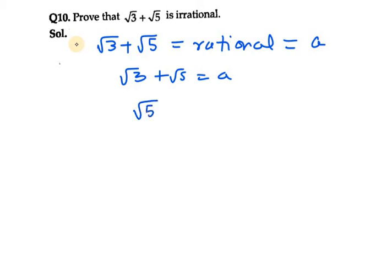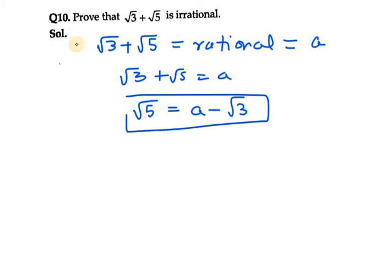From this we can get the value of √5, which equals a minus √3. So √5 = a − √3. Now we need to square both sides.